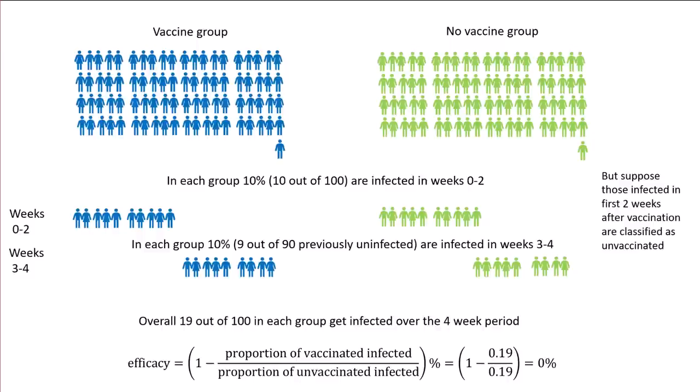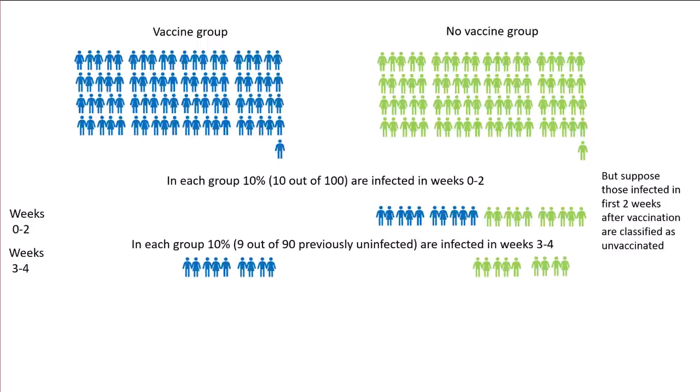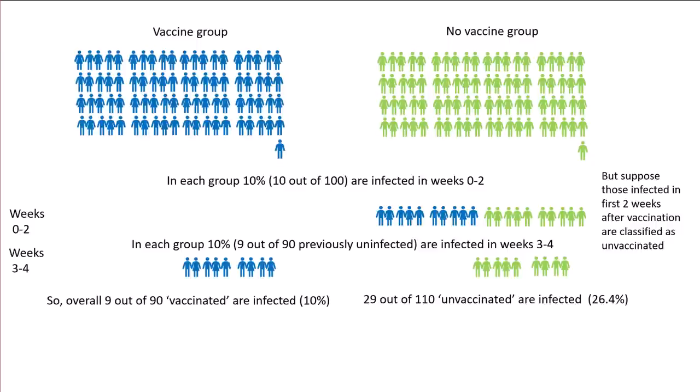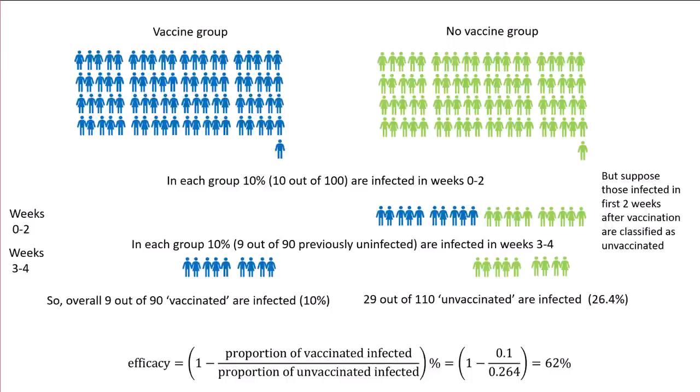But suppose those infected in the first two weeks after vaccination are classified as unvaccinated. Then we move those 10 people from the vaccine group who were infected in the first two weeks and classify them as unvaccinated. Now 9 out of 90 are considered vaccinated and infected — that's 10%. But now 29 out of 110 classified as unvaccinated are infected, and that's 26.4%. So the efficacy is now 62%.